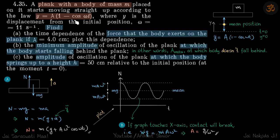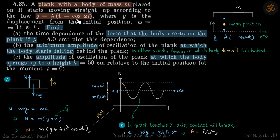As t increases, cos ωt goes from 1 to -1, so y goes from 0 to 2a. The system starts at y = 0, rises to a maximum height of 2a, then comes back down, performing SHM above this line. The mean position is in between, with amplitude a on each side, so the maximum position is at 2a when cos ωt = -1.